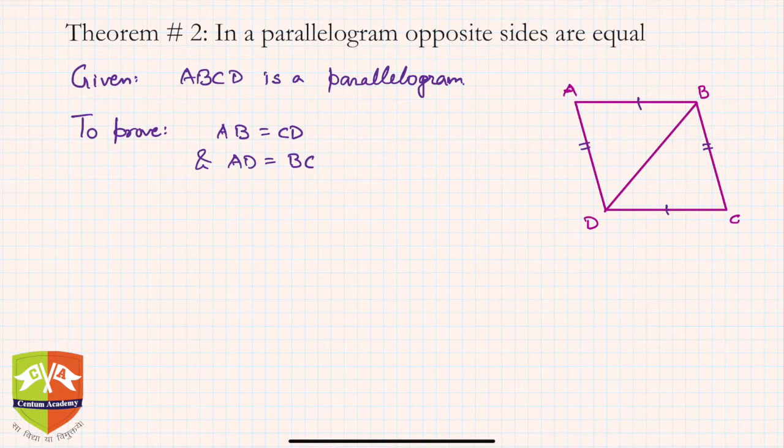Whenever you see such kind of problem where you have to prove two sides to be equal, one way is to prove that they are part of the corresponding parts of congruent triangles (CPCT), and hence we are done. So let's try to prove that.